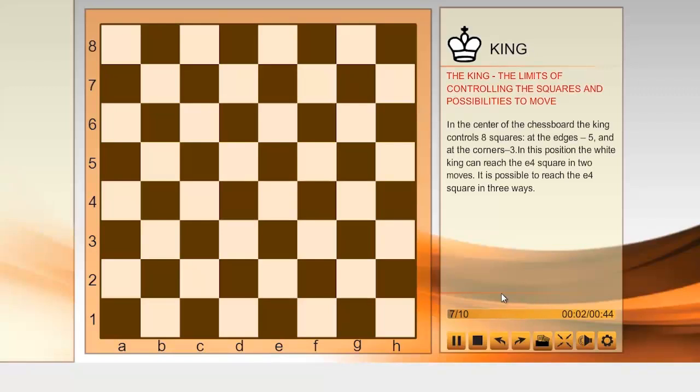The king. The limits of controlling the squares and possibilities to move. In the center of the chessboard, the king controls eight squares. At the edges, five. And at the corners, three.